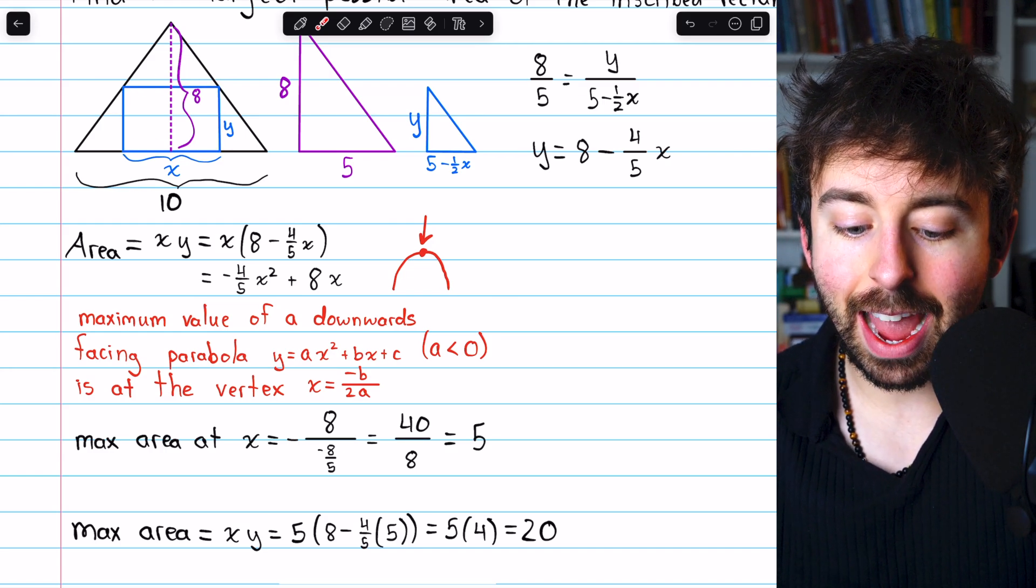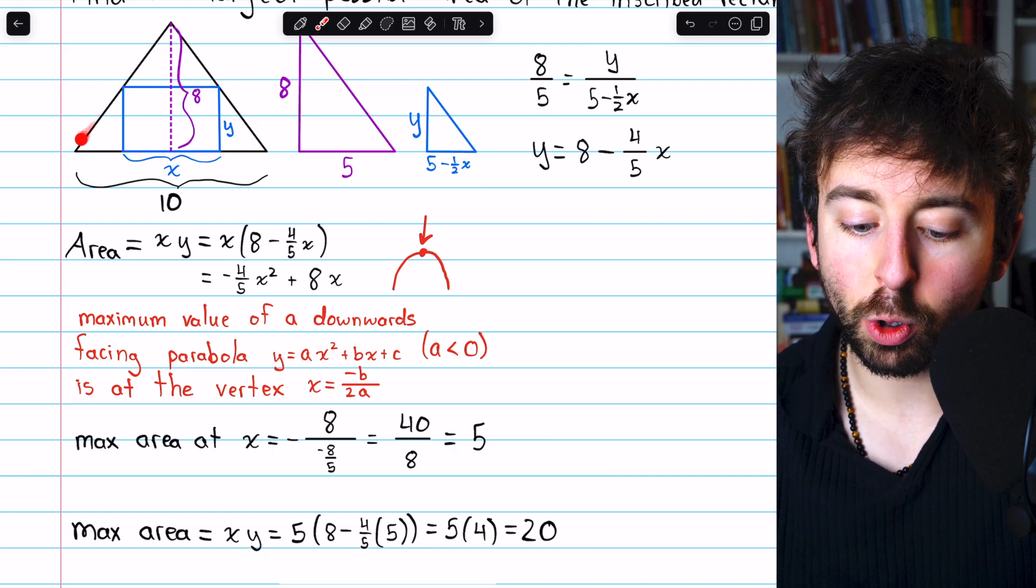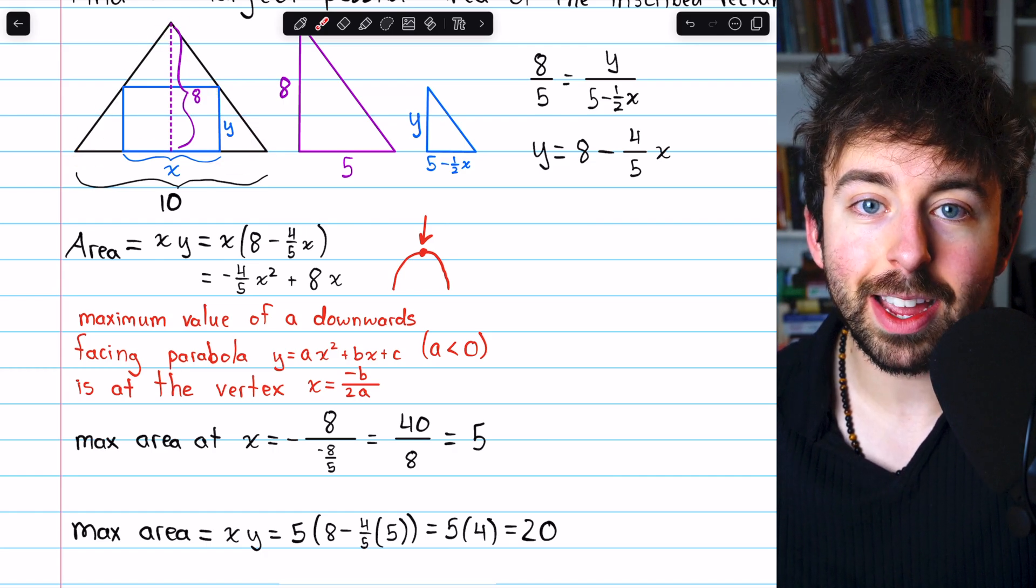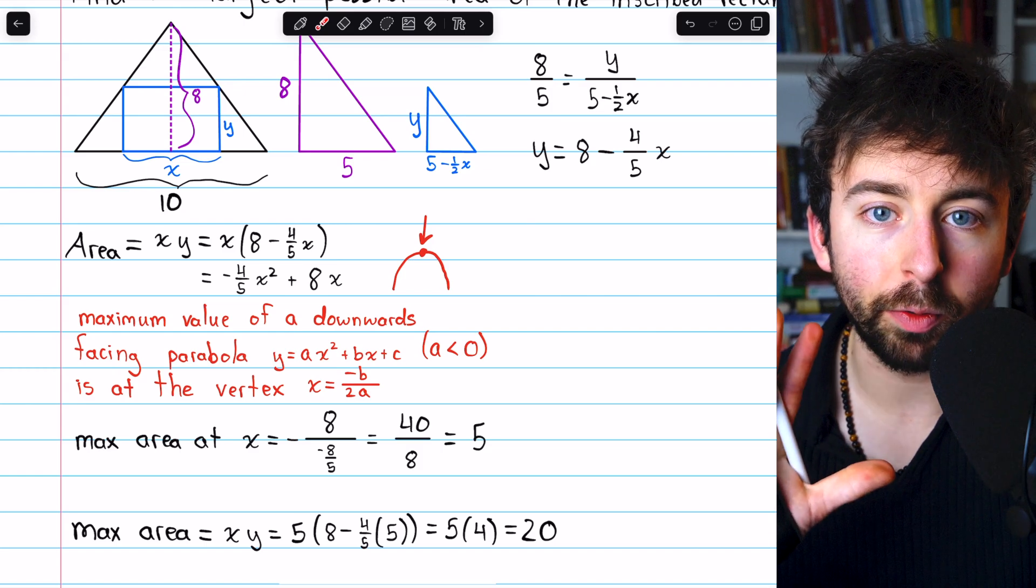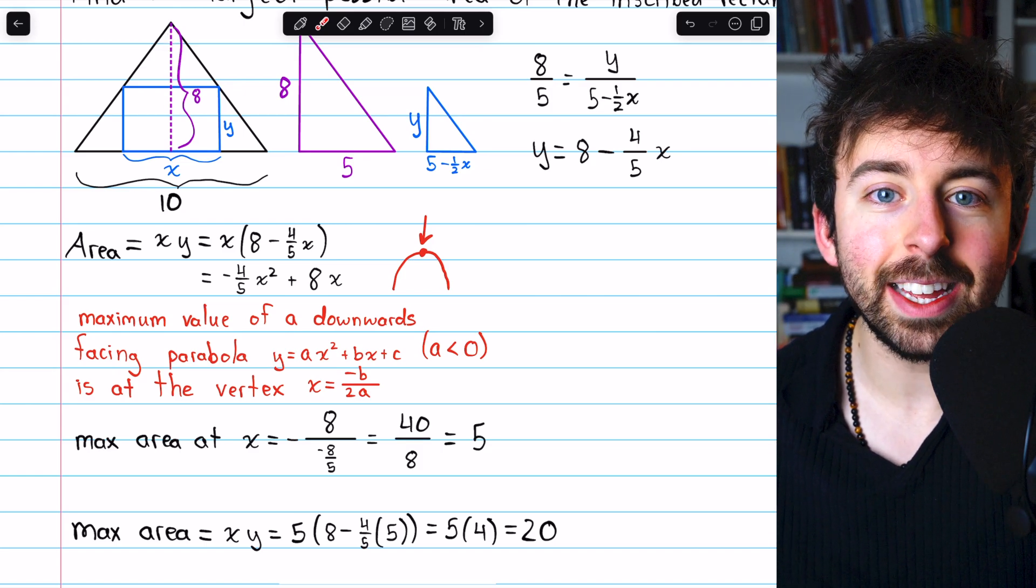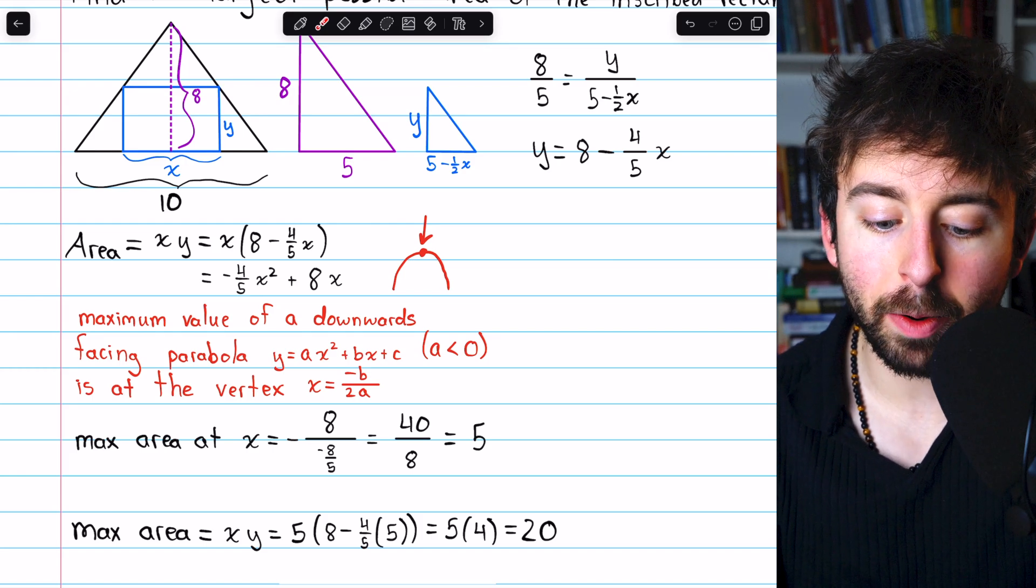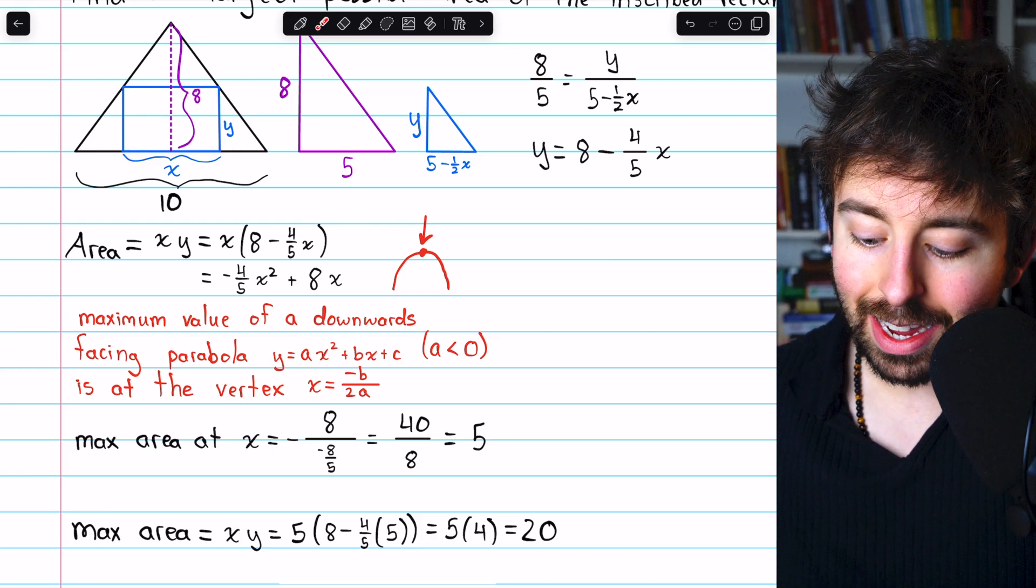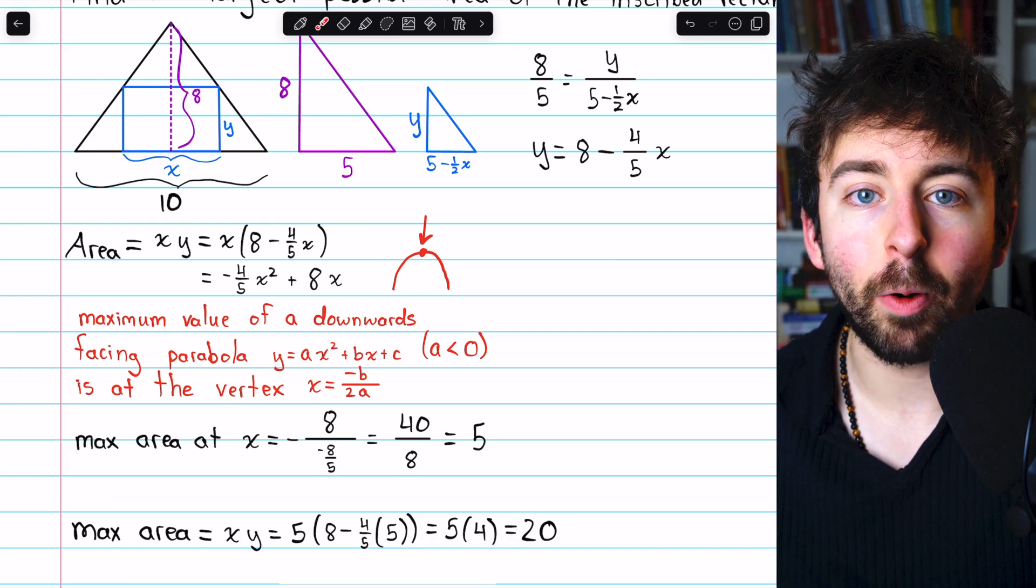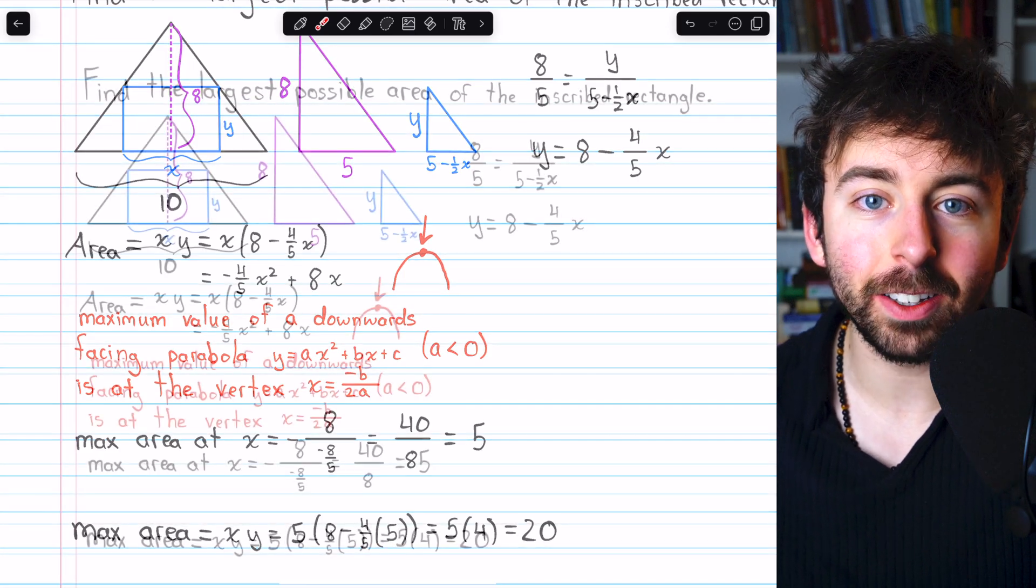You might notice that the area of the isosceles triangle, one-half base times height, is one-half of 10, so 5, times the height of 8, so 40. So the maximum area of the inscribed rectangle is actually half the area of the isosceles triangle. That's a pretty cool result.